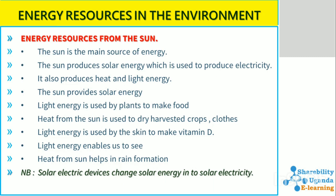Energy resources from the sun: the sun is the main source of energy in our solar system. The sun produces solar energy, which is used to produce electricity; it also produces heat and light energy. Light energy is used by plants to make food through the process of photosynthesis.